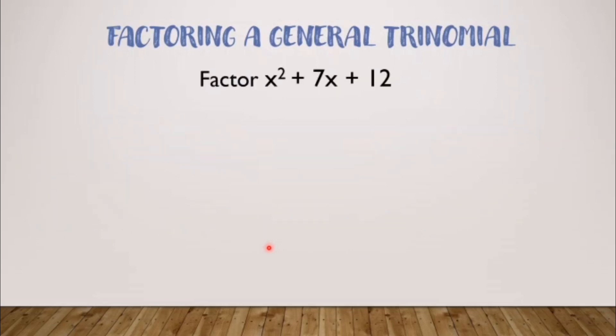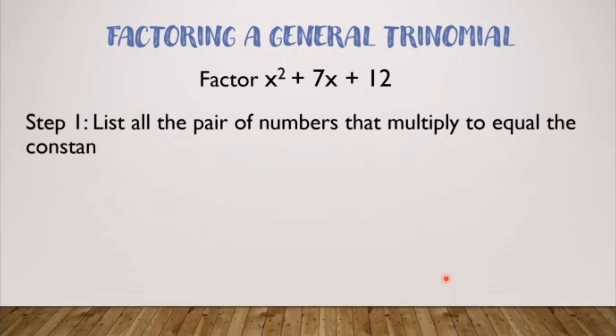Let's proceed with our example. Let's factor x squared plus 7x plus 12. We have steps in solving to make it easier for you to understand. The first step: we have to list all the pair of numbers that multiply to equal the constant which is 12. We'll list all pairs of numbers that when multiplied, the answer is 12. We'll think of two numbers that when multiplied, give 12. So we have 1 times 12 is 12, 2 times 6 is 12, 3 times 4 is 12. We've listed them all.